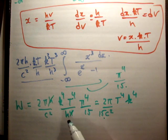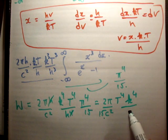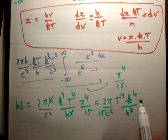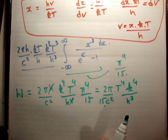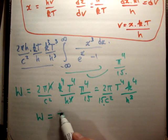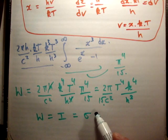If we do a bit of cancellation, we get 2π over c squared times 15, times T to the fourth times k to the fourth, with h to the third on the denominator. These are all constants except for T to the fourth, so we say intensity equals sigma times T to the fourth, where sigma is all the constants. That's Stefan's law.